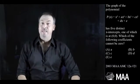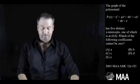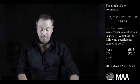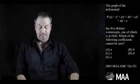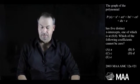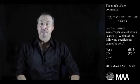The graph of the polynomial p of x equals x to the fifth plus ax to the fourth plus bx cubed plus cx squared plus dx plus e has five distinct x-intercepts, one of which is at zero, zero.